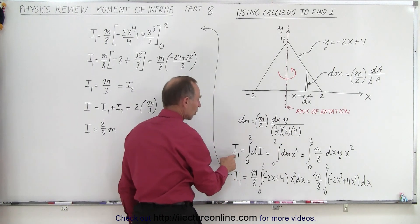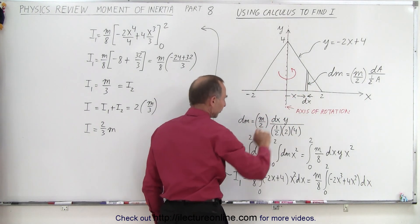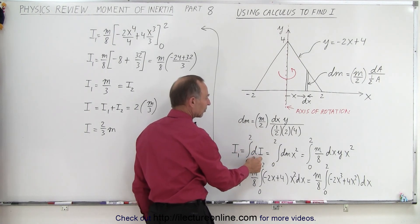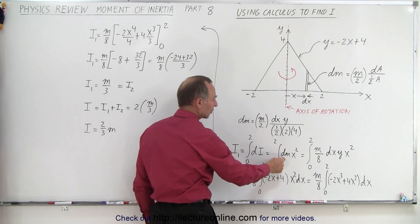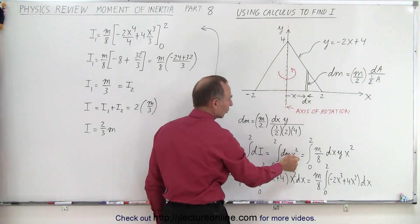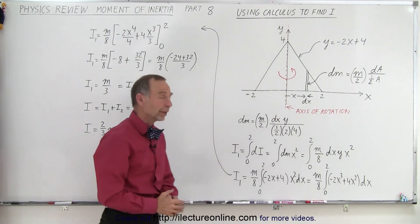So now we're going to find the total moment of inertia of one half, of the first half, and that's equal to the integral of all the little dI's, and dI is defined as the small little mass of the little strip, times the distance to that strip from the point of rotation, squared. So therefore we get x squared.